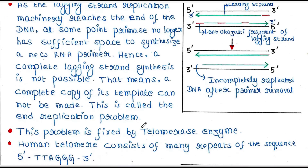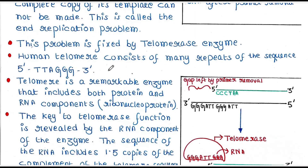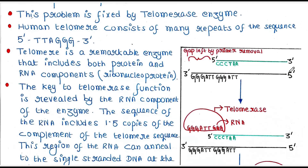This problem is fixed by the telomerase enzyme. Human telomere consists of many repeats of the sequence 5'-TTAGGG-3'. This is the template, and this is the lagging strand, and this is the gap at the end. This TTAGGG sequence is repeated many times in the template strand. Now it's the game of telomerase.